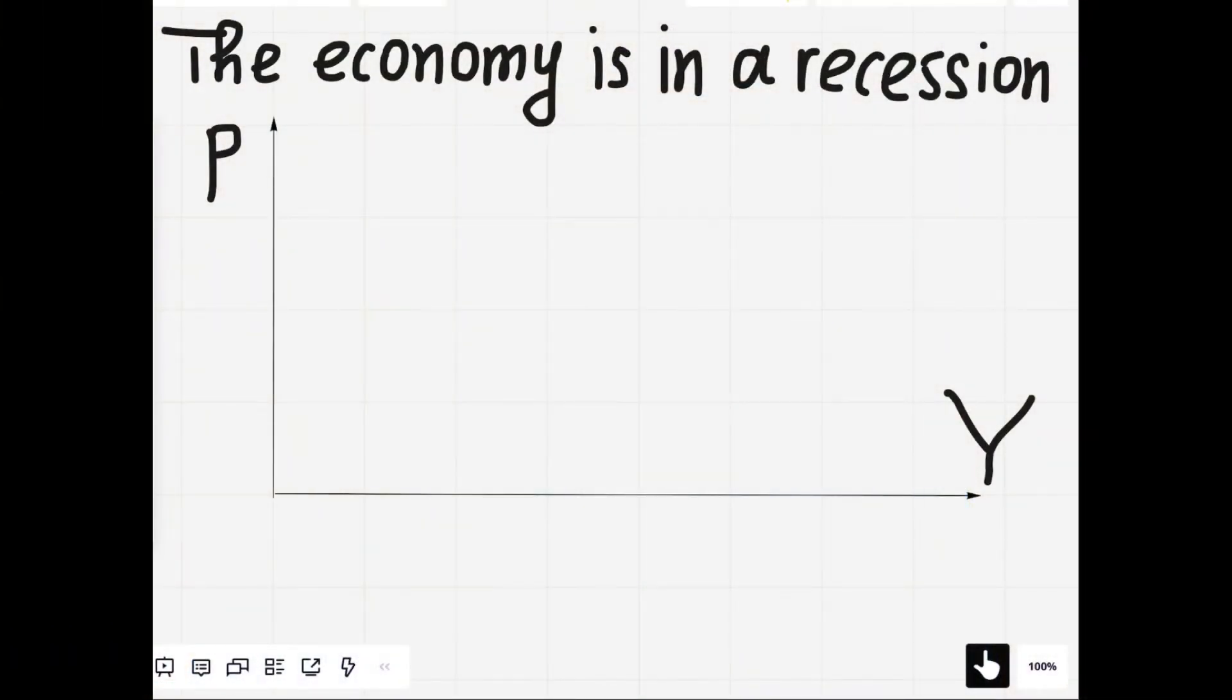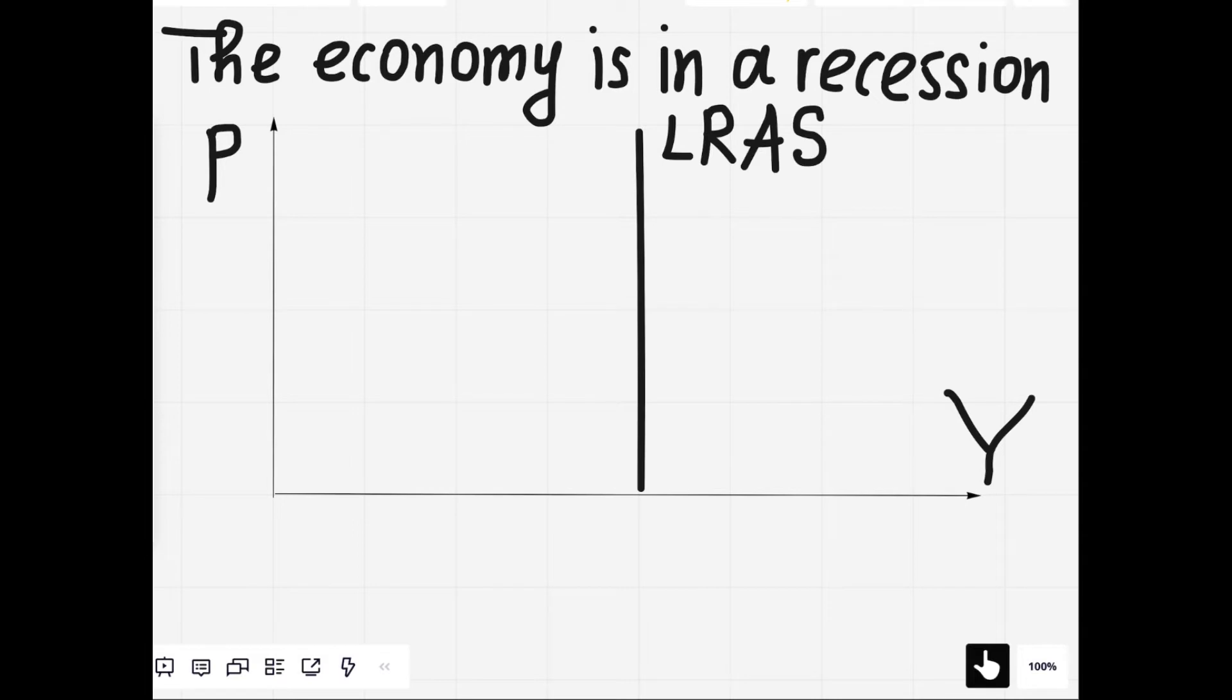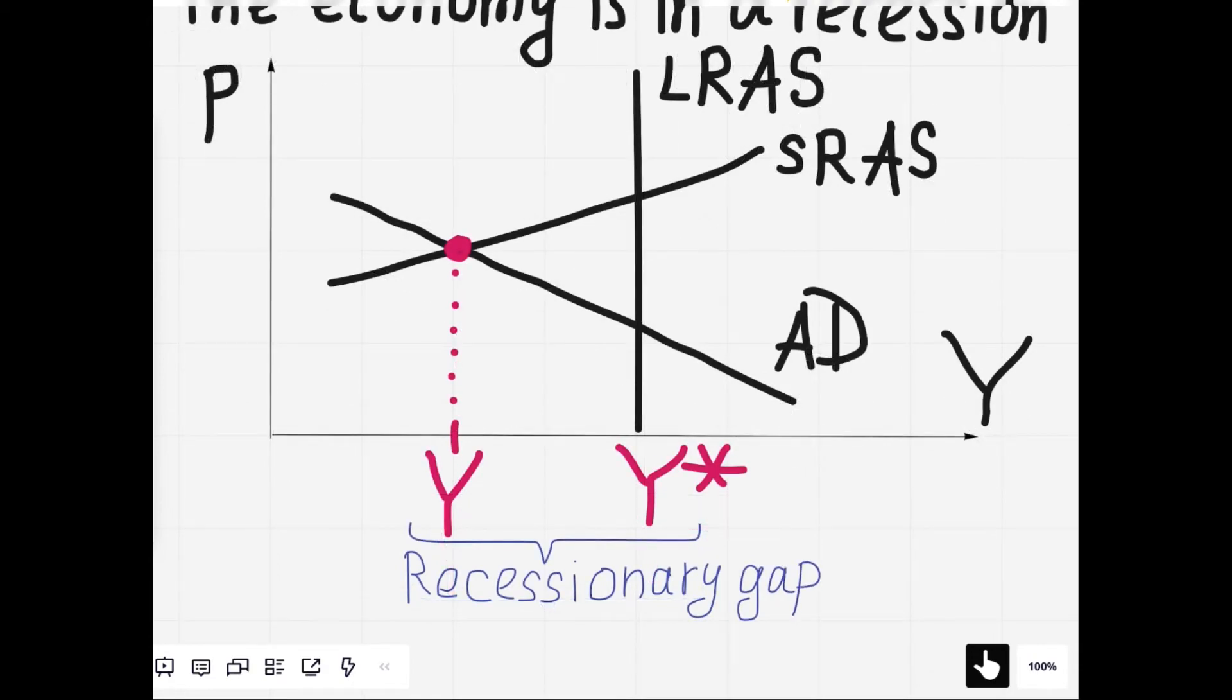So how to show an economy in a recession on the ADAS graph? First, let's draw the long-run aggregate supply. And ask, where is this economy? Is it on the long-run aggregate supply? No, it's not, because the economy is not in the long-run equilibrium. So where is this economy? Is it on the right or on the left? Because the economy is in a recession, it's on the left. It produces less than potential output. And this difference, the current GDP minus the potential GDP, is called a recessionary gap.